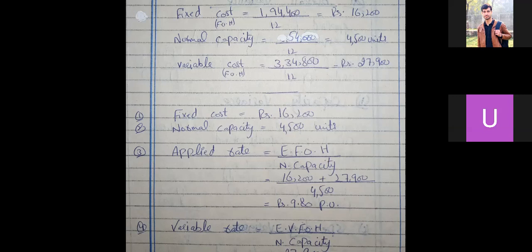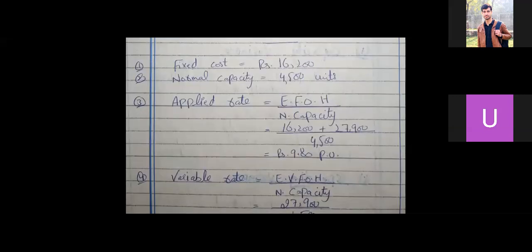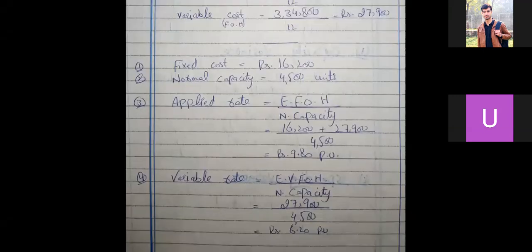After converting, fixed cost is 16,200 and normal capacity is 4,500 units. Applied rate equals estimated FOH divided by normal capacity. Estimated FOH is fixed plus variable cost: 16,200 plus 27,900 divided by 4,500 units gives 9.8 per unit applied rate. Then variable rate equals variable FOH 27,900 divided by normal capacity 4,500, giving 6.2 per unit.